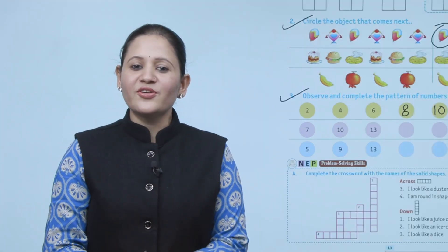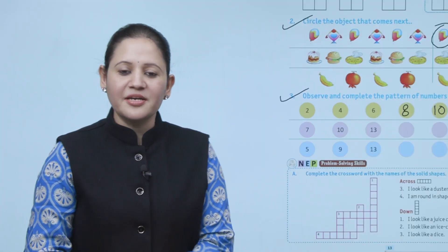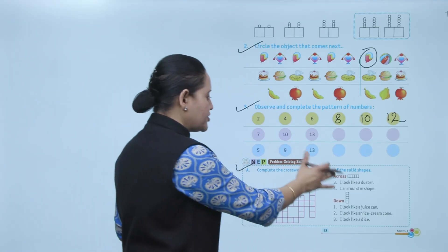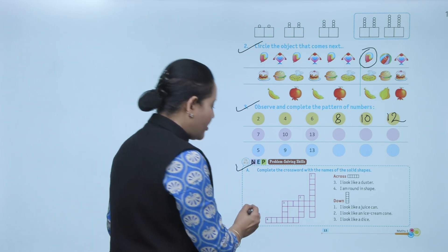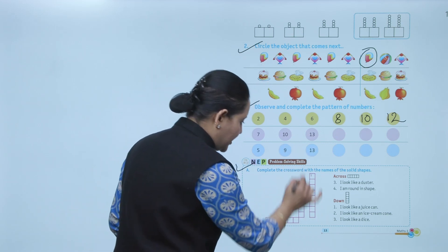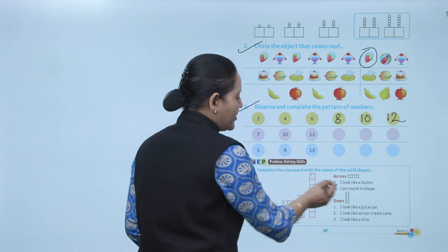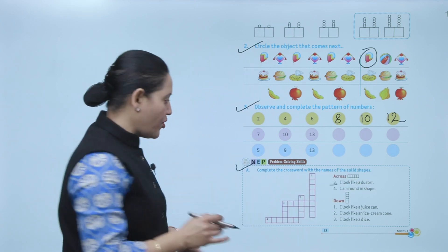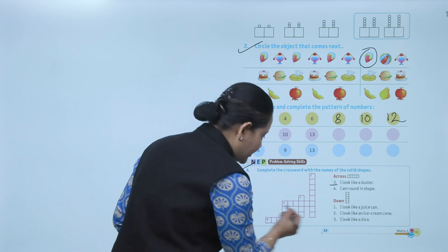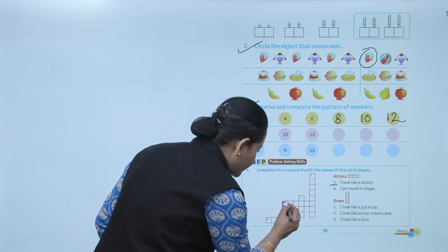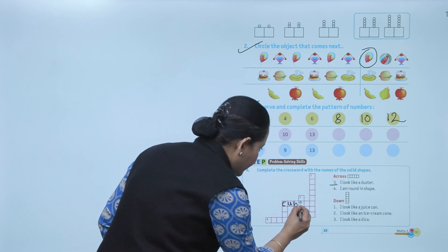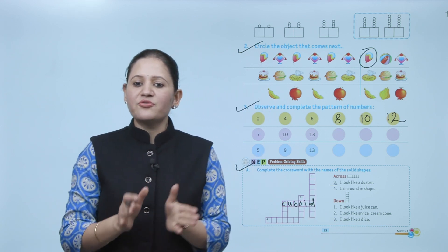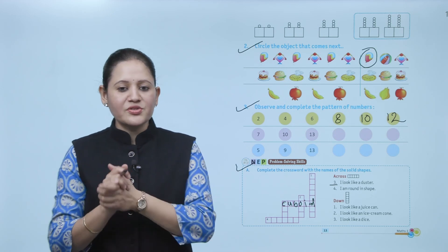Next: complete the crossword with the name of the solid shape. Some clues are given — across means horizontal and down means vertical. At number 3 — 'I look like a duster.' The shape of a duster is cuboid, and it's across, so we write C-U-B-O-I-D. First read the clues and accordingly fill the crossword.